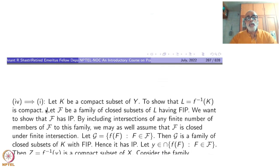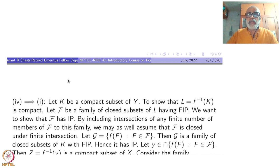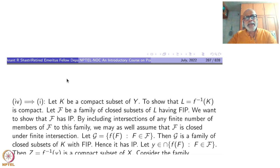Now four implies one. We have a function which is closed and the inverse image of a single point is compact. From that we have to deduce that the function is actually proper — namely, the inverse image of any compact set is compact. Start with a compact subset K of Y, and put L equal to f-inverse of K. We have to show that L is compact.